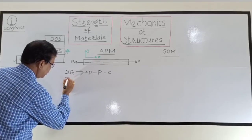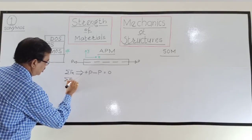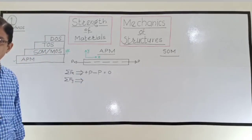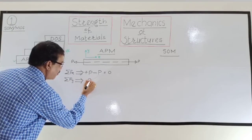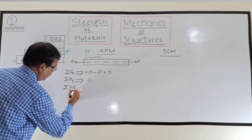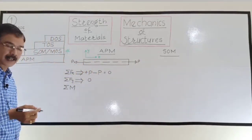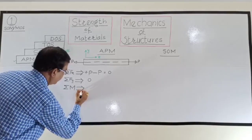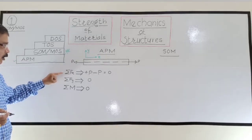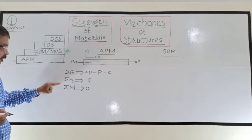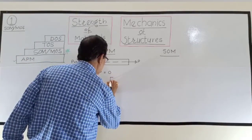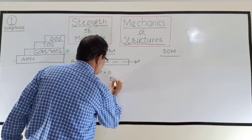Sigma Fx equals zero: summation of all forces in X direction — there are two forces, one towards right (+P) and one towards left (−P), so +P − P = 0. Sigma Fy equals zero: there is no force in Y direction, so it is already 0. The third condition, summation of moments: since both forces are collinear, their moment is also 0. Therefore, all three conditions are satisfied.